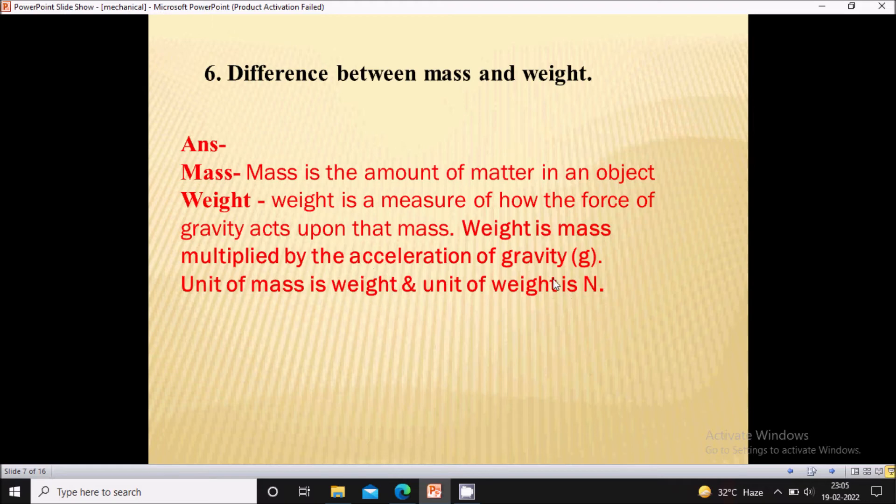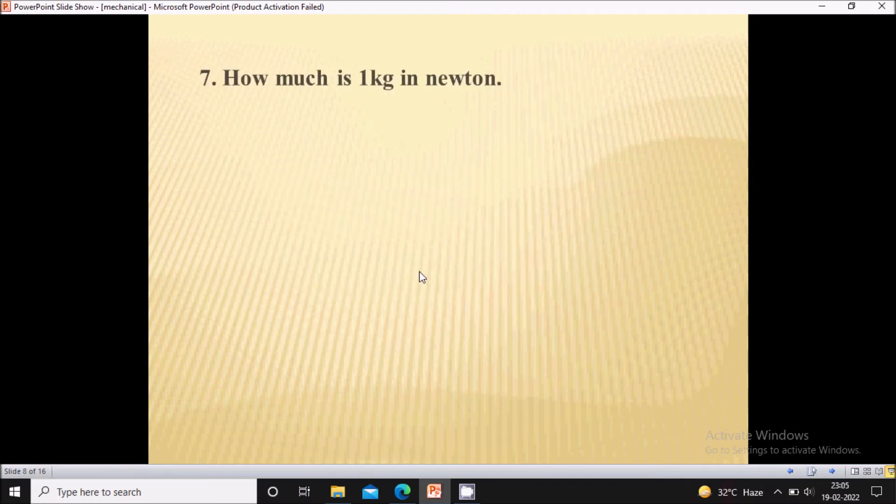Unit of mass is kg and the unit of weight is Newton. Seventh question, how much is 1 kg in Newton? So 1 kg is nothing but 9.81 Newton.